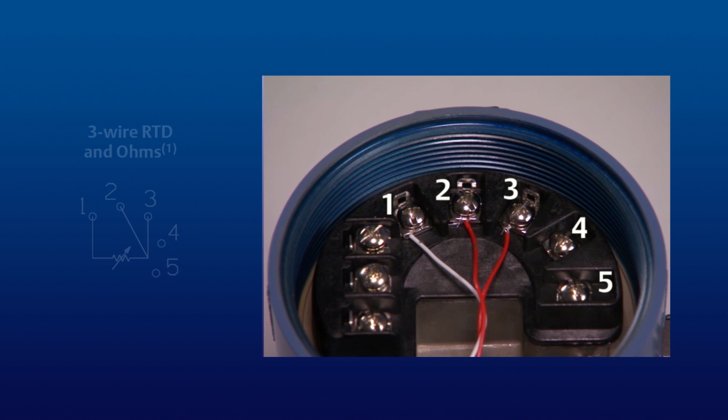Here is the proper wiring configuration for a 3-wire RTD sensor. Note that the single white wire is attached to terminal 1 and that the two red wires are connected to terminals 2 and 3.